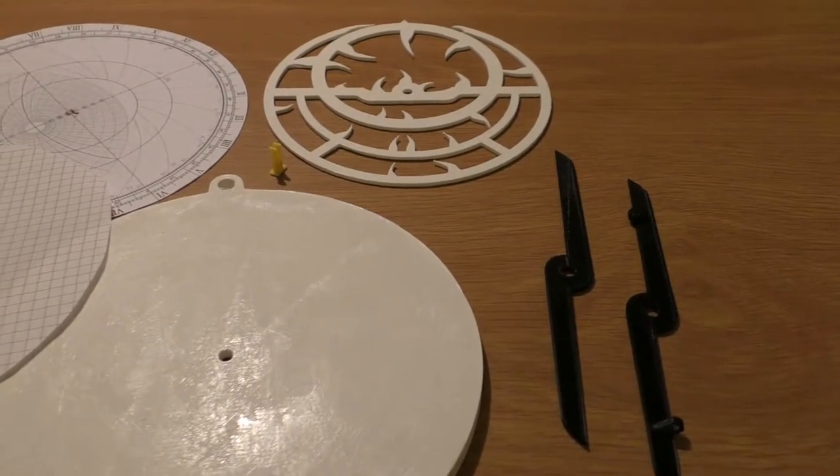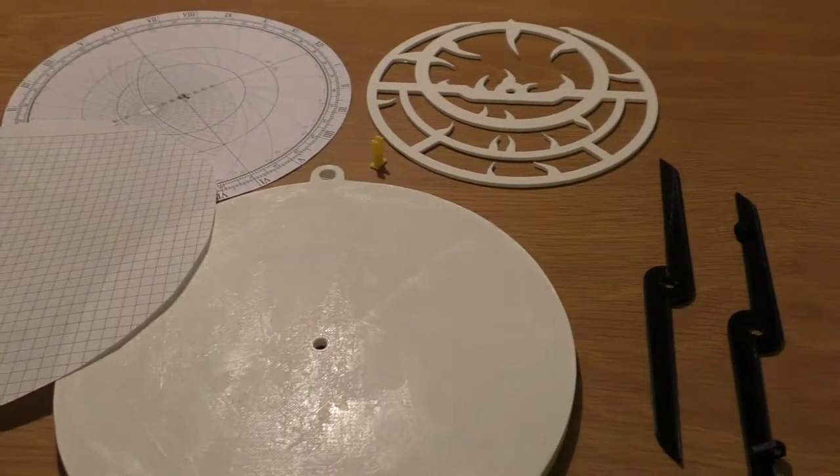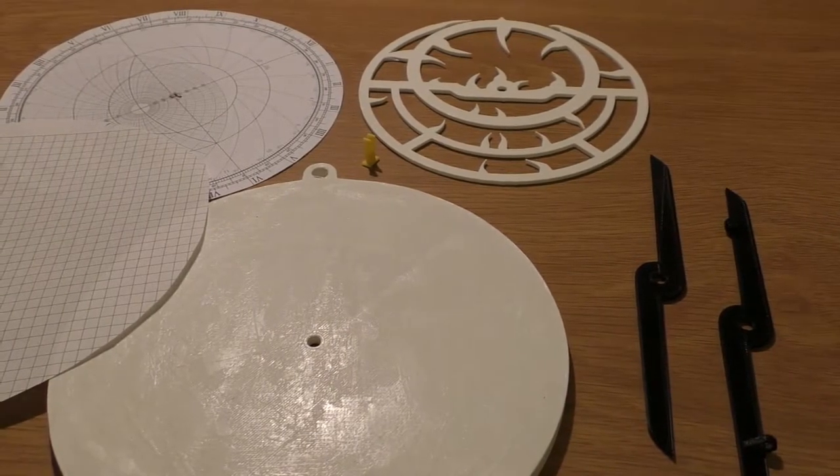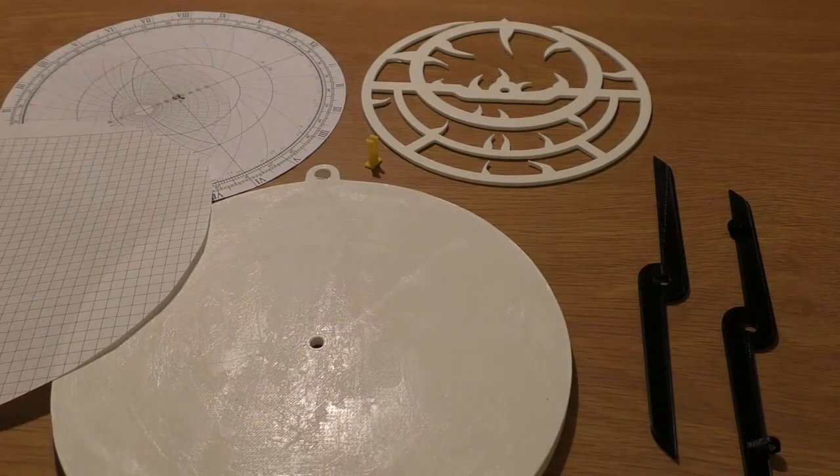Once all five pieces of the astrolabe have been printed, along with the two paper graduated plates for the front and back of the astrolabe, it can be put together.